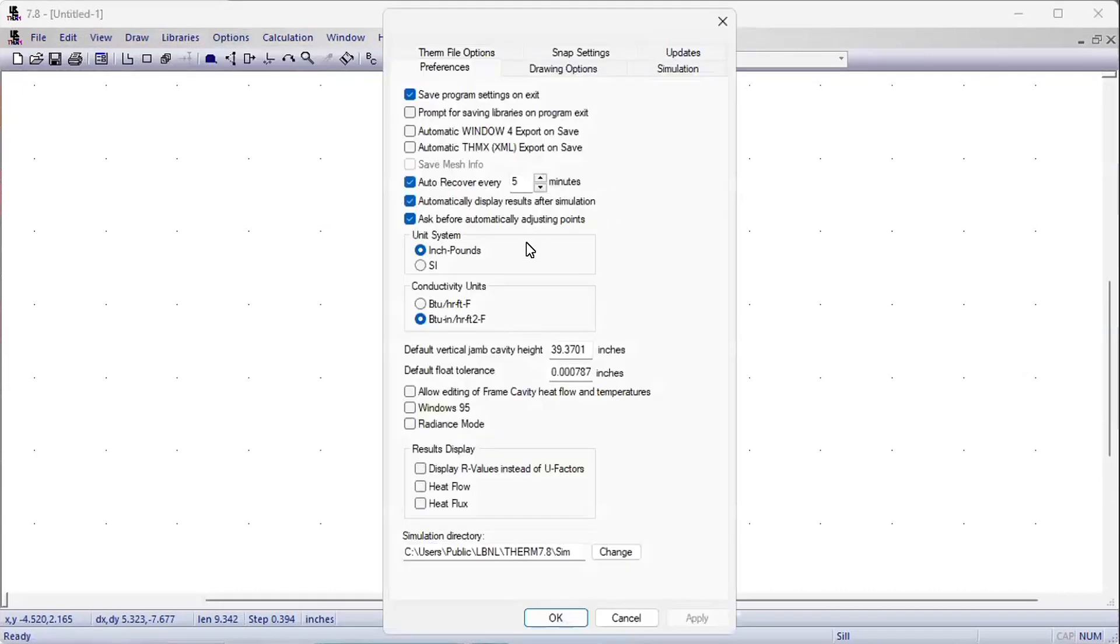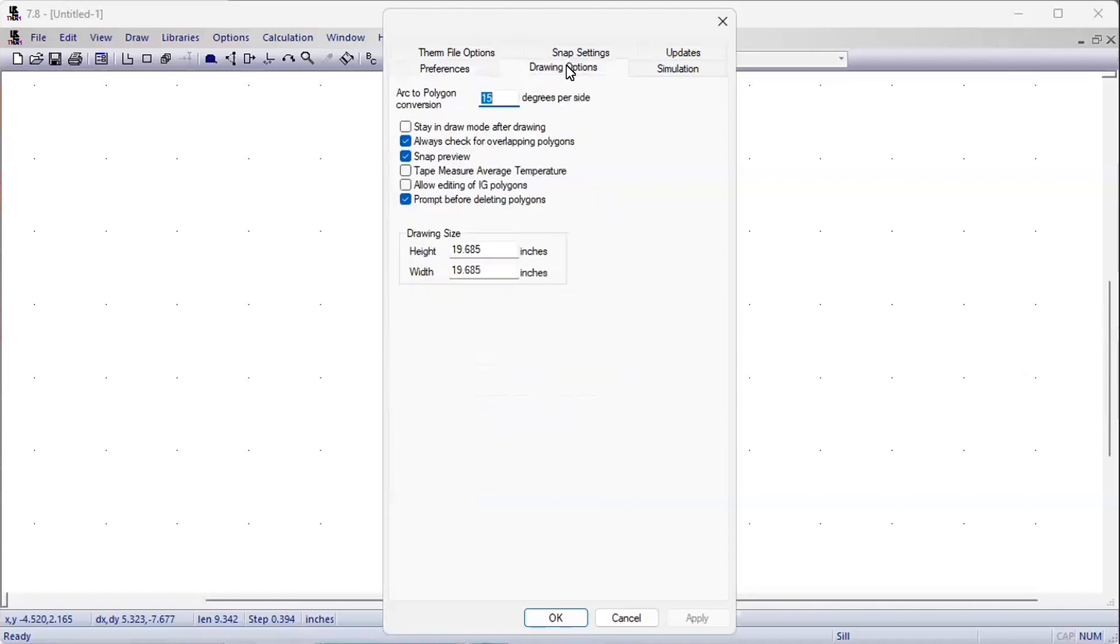Okay, so I have meanwhile opened Therm. We are using version 7.8.58. This is close, if not the latest version. We can check a few options in our preferences tab. We use inch pounds. We use BTUs per inch per Fahrenheit square foot.